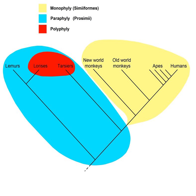Species have a special status in systematics as being an observable feature of nature itself and as the basic unit of classification. It is usually implicitly assumed that species are monophyletic, or at least paraphyletic. However, hybrid speciation arguably leads to polyphyletic species. Hybrid species are a common phenomenon in nature, particularly in plants where polyploidy allows for rapid speciation.